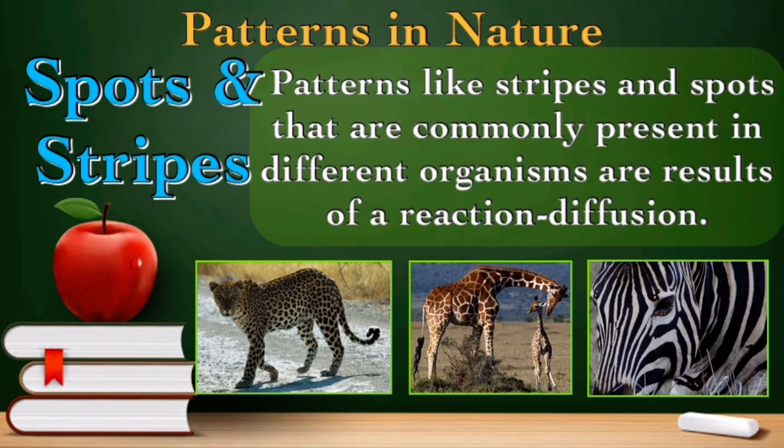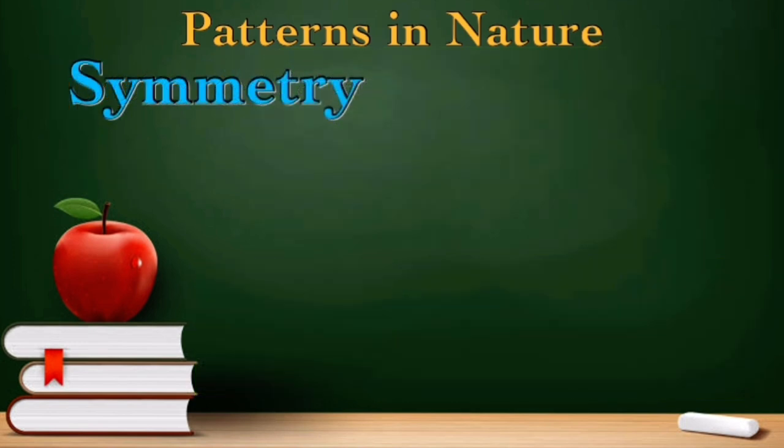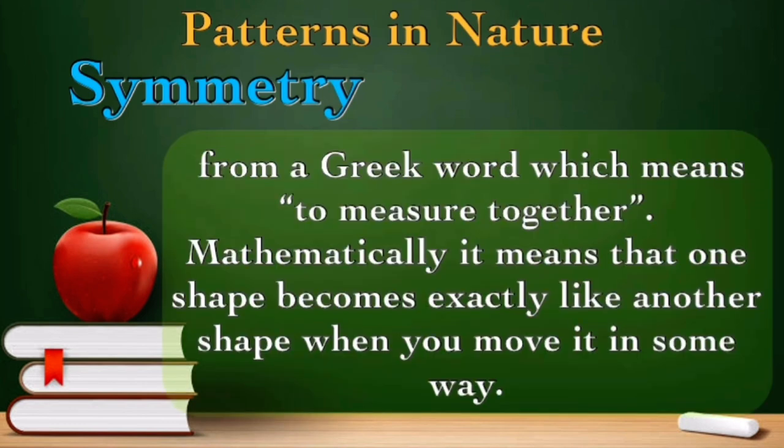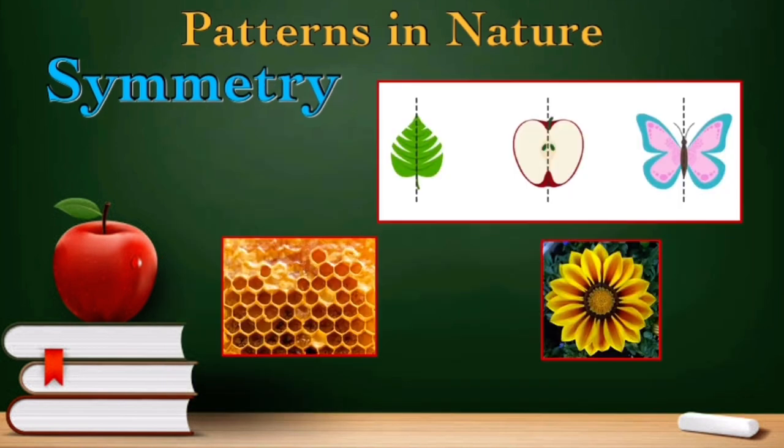And we have here symmetry. Symmetry comes from a Greek word which means to measure together. Mathematically, it means that one shape becomes exactly like another shape when you move it in some way. It indicates that you can draw an imaginary line across an object and the resulting parts are mirror images of each other. For example, we have here the leaf, the apple, and the butterfly. This demonstrates symmetry because the left part of it is a mirror image of the right part.